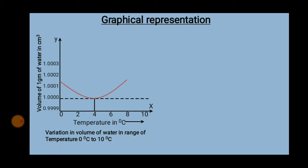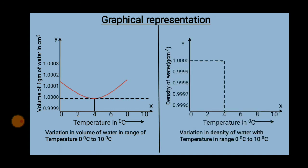For 1 gram of water, the volume at 4°C is 1 centimeter cube. The next figure shows the variation in density of water with temperature in the range from 0°C to 10°C. When water is heated from 0°C, the density of water first increases from 0°C to 4°C and then decreases above 4°C to 10°C.